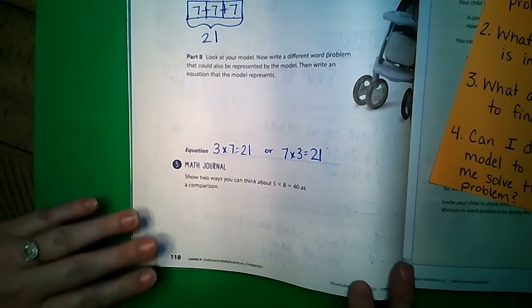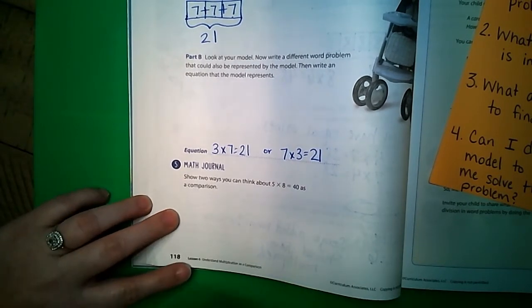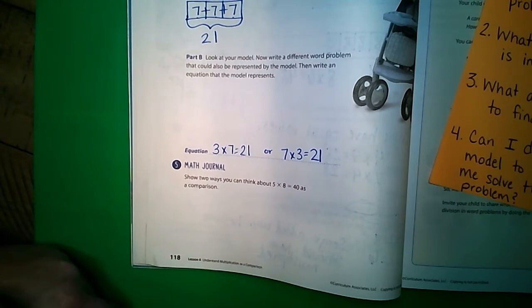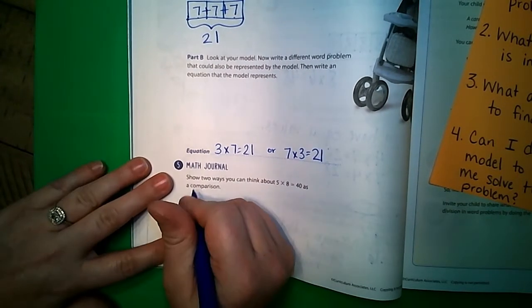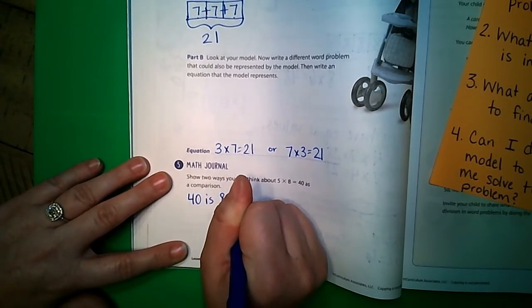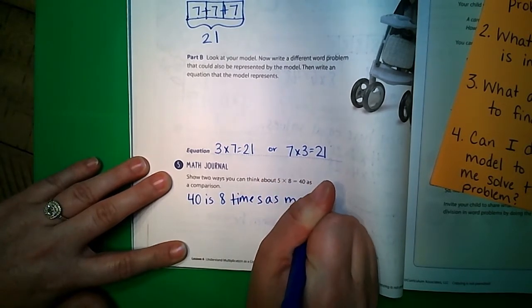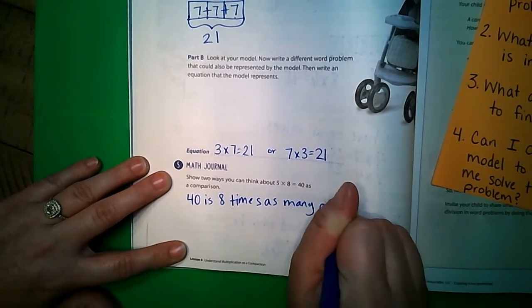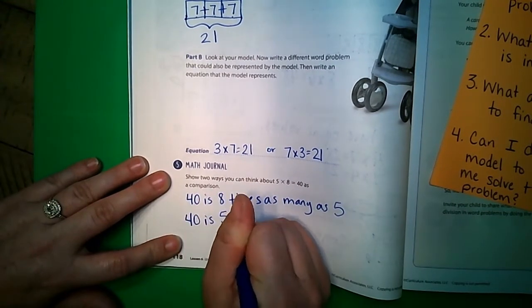And then our last one, number five: show two ways that you can think about five times eight equals 40 as a comparison. So one way is you can do 40 is eight times as many as five, or you can do 40 is five times as many as eight. And those are your two comparisons.